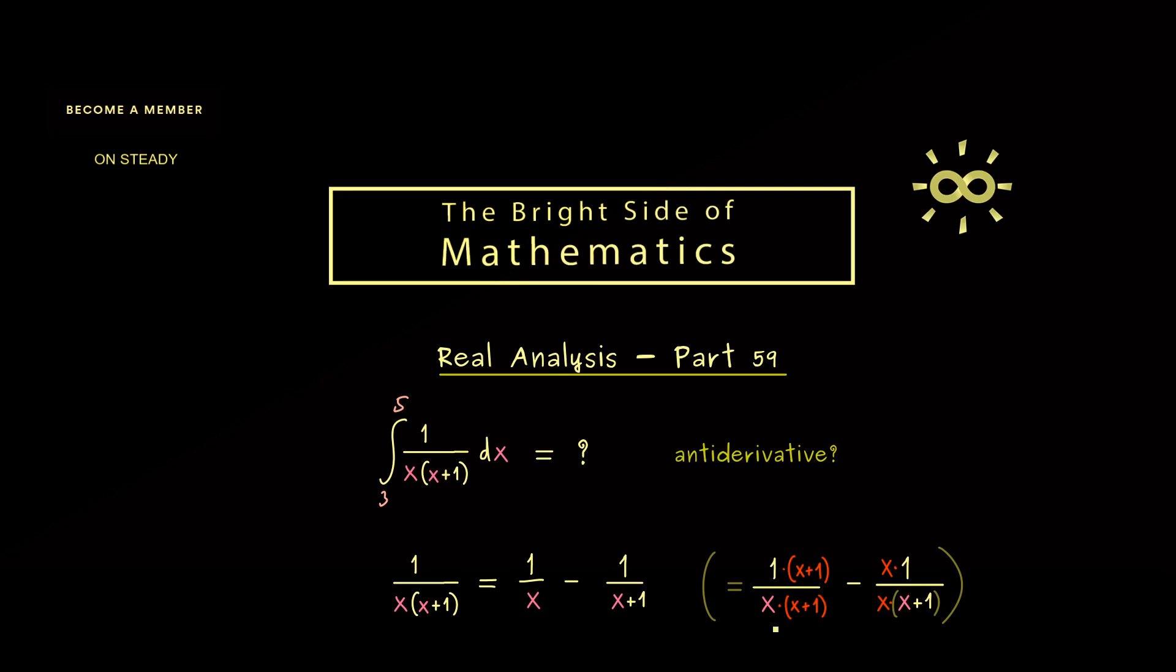And the second fraction we multiply with x. And then what you should see is that we can write this with one denominator, and then we would subtract x in the numerator. Hence what remains is exactly the original rational function here.